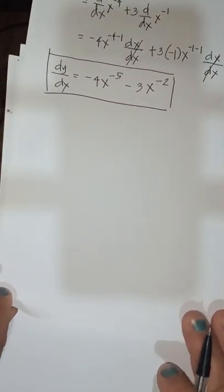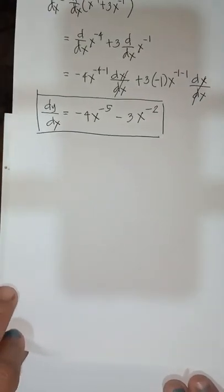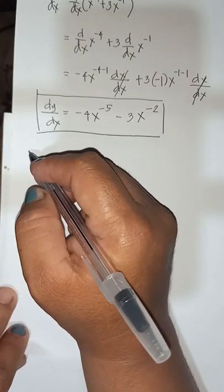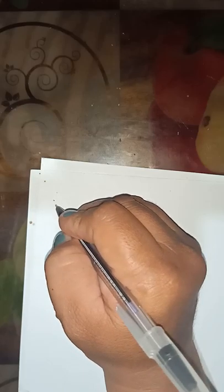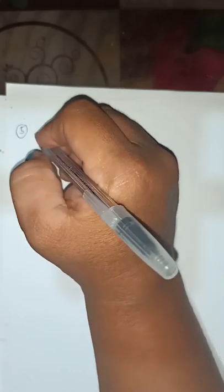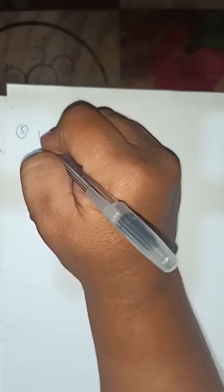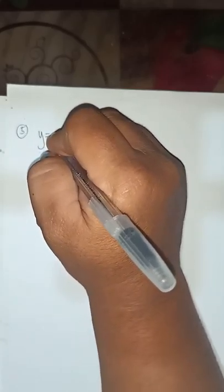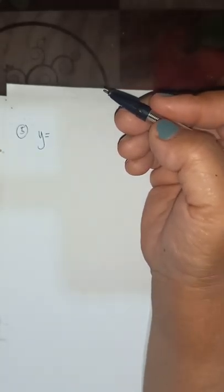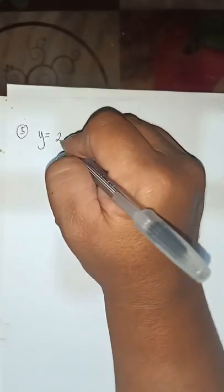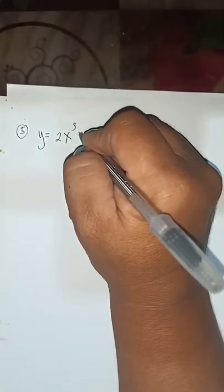Number 5: y is equal to 2x cubed plus the square root of x.